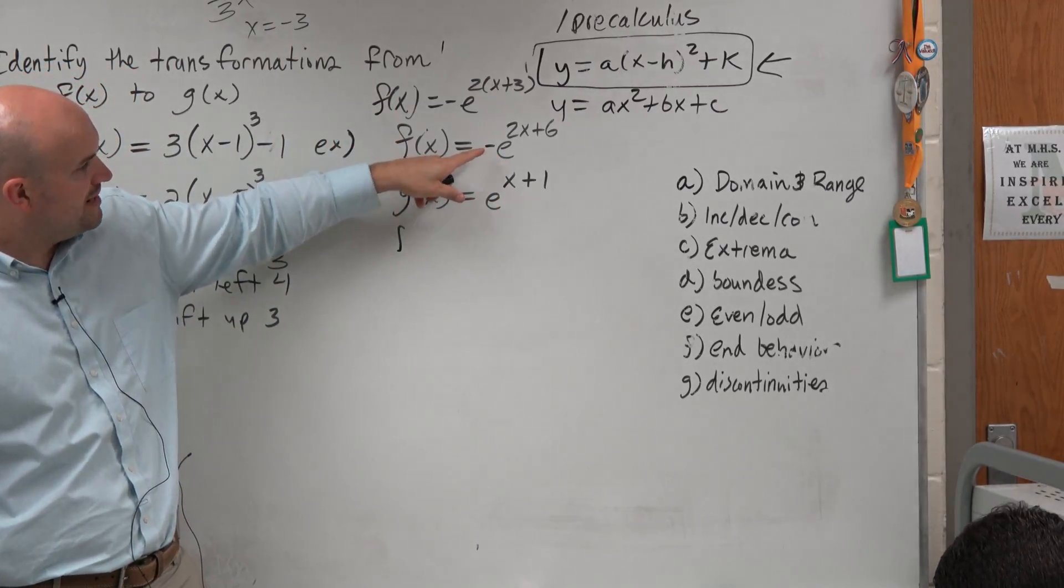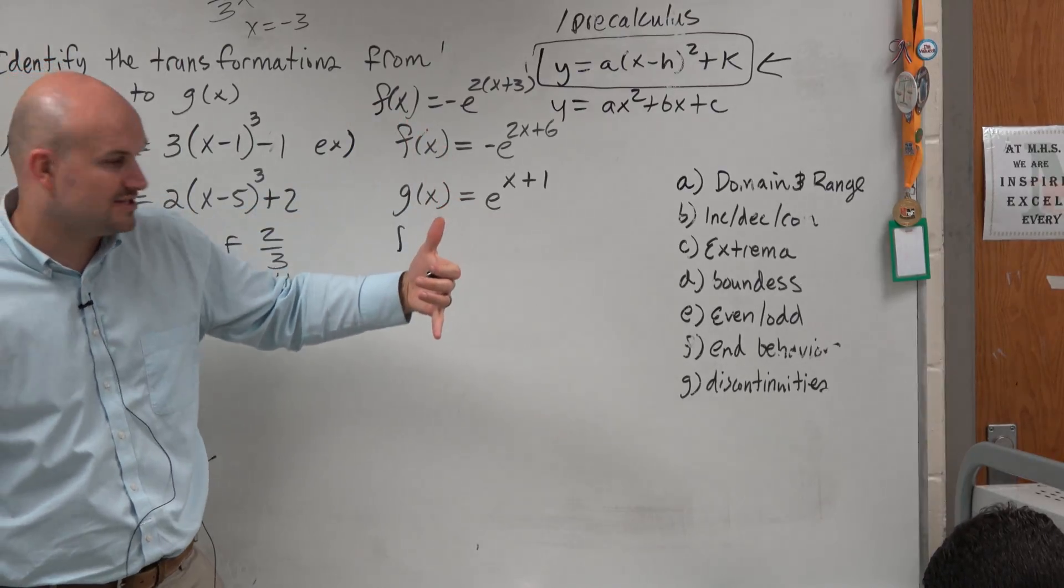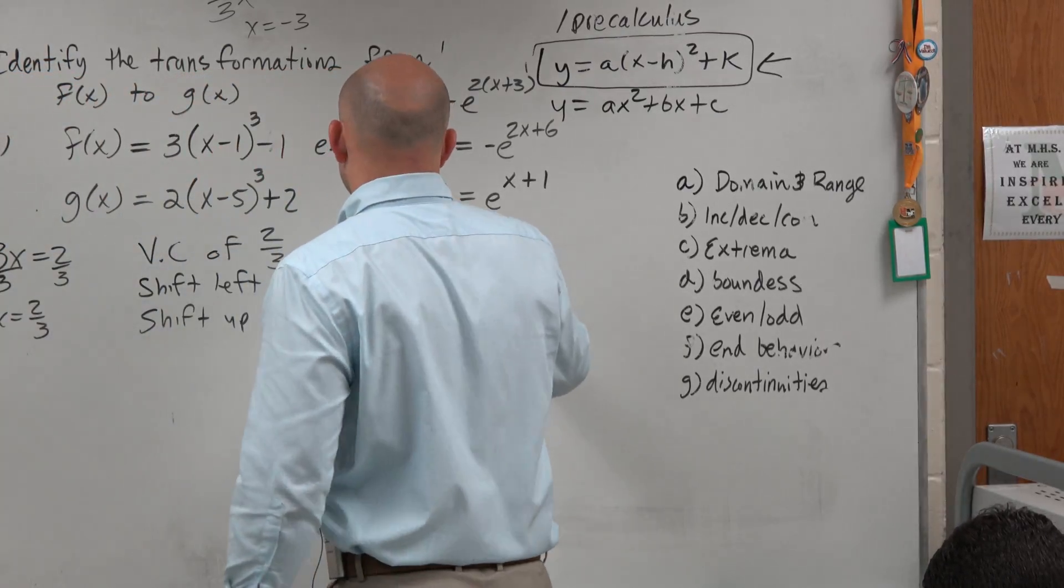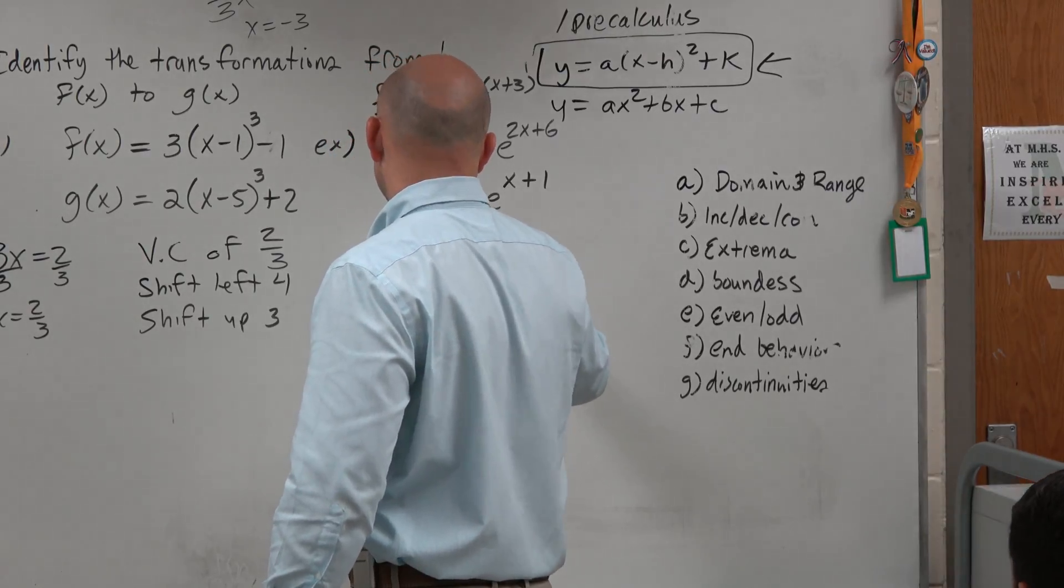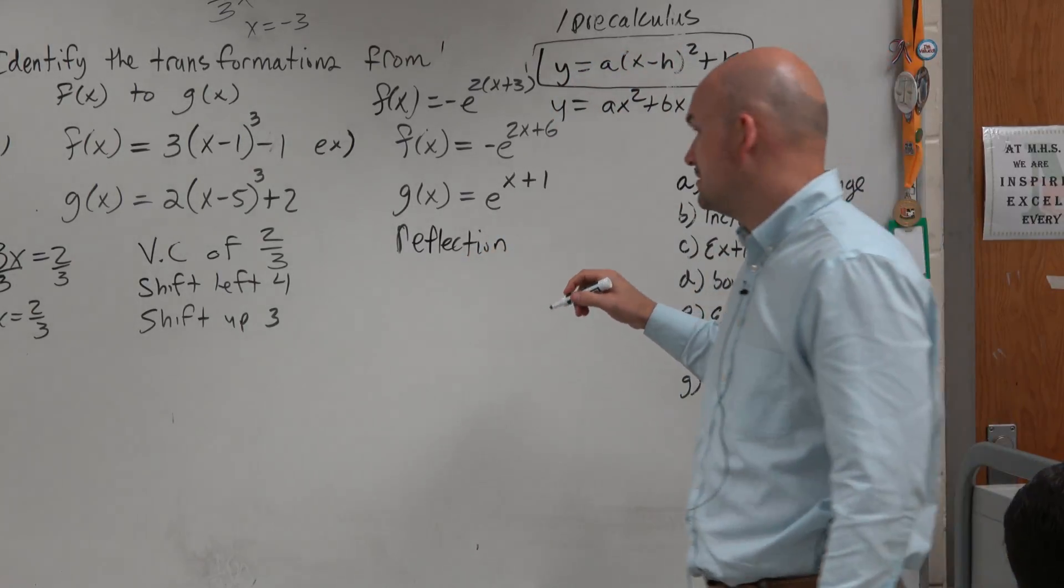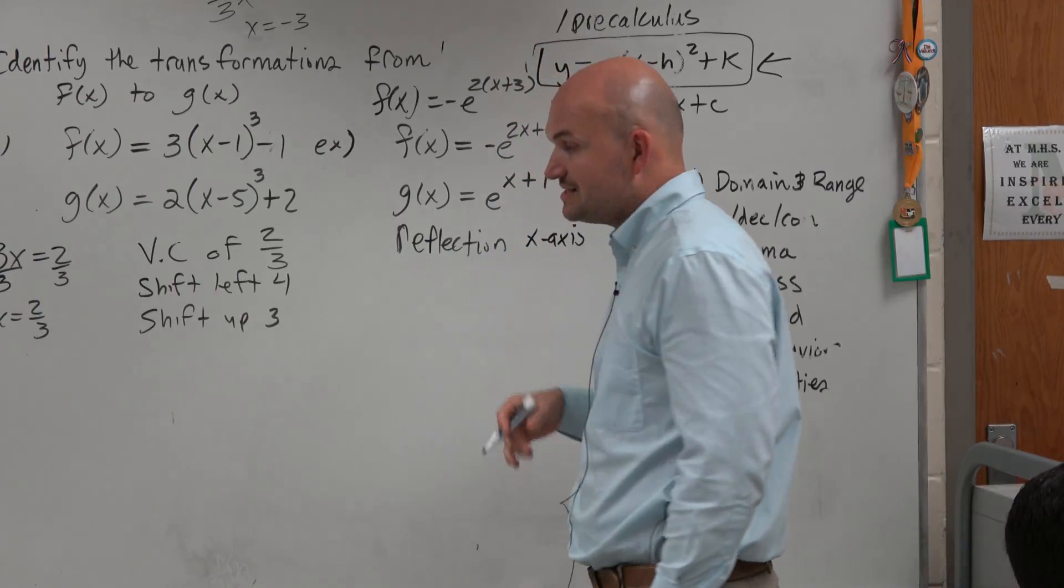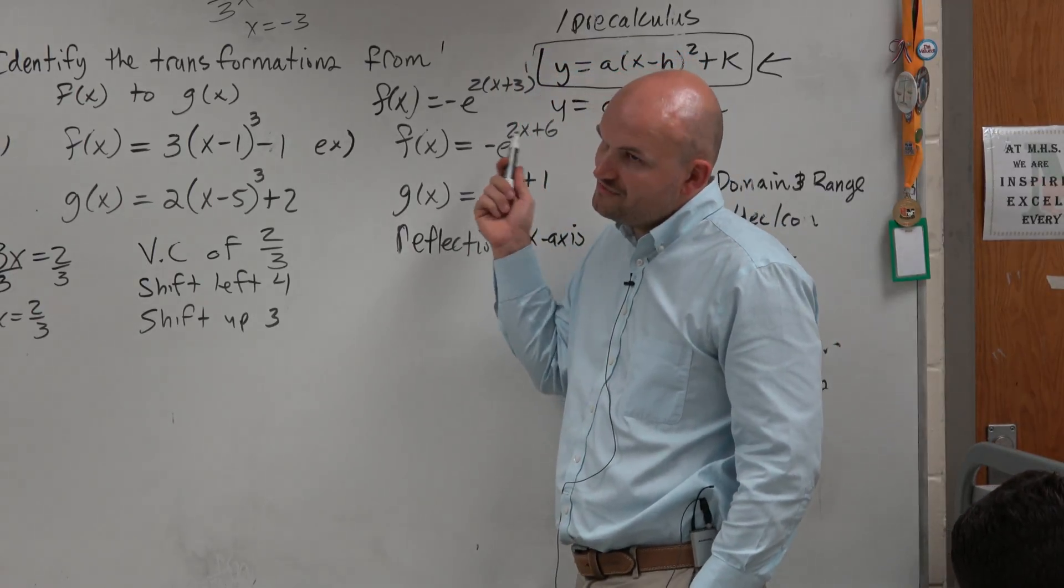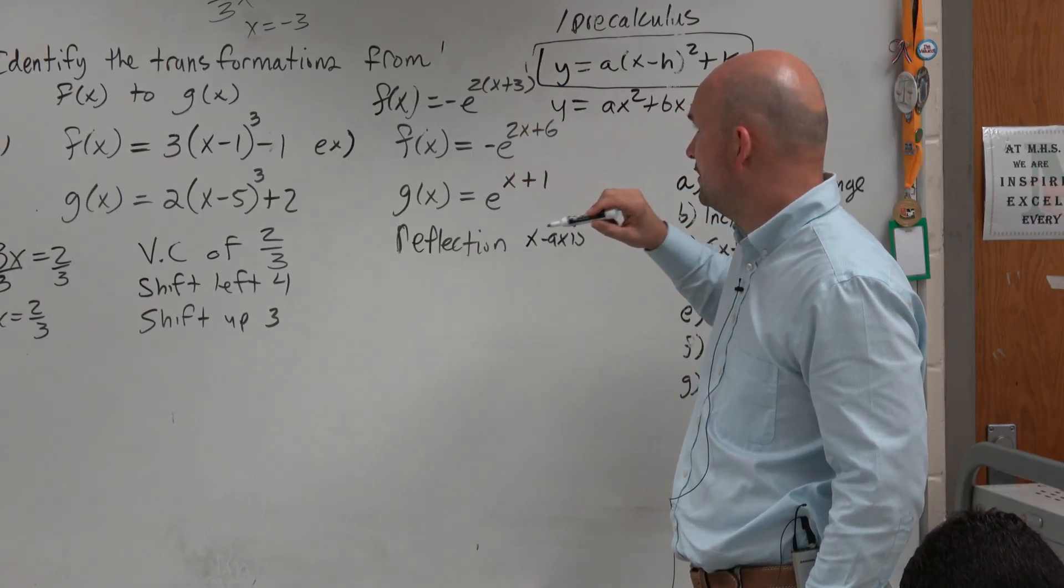Now, from here to here, I have to multiply by a negative. And I'm multiplying by negative on the outside. So therefore, that would be a reflection of the x-axis or y-axis? x-axis. It's going to be a reflection of the x-axis because we're multiplying by a negative on the outside. Multiply by a negative on the outside, you get a reflection over the x-axis.